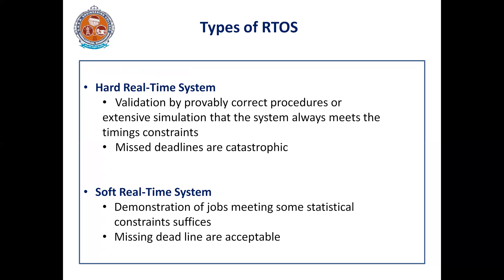There are two different types of RTOS. One is called hard real-time systems and another one is called soft real-time systems. In the case of hard real-time systems, validation by provably correct procedures or extensive simulation that the system always meets the timing constraints is important. Whenever you are executing your task code or routines, the deadlines are given highest importance.